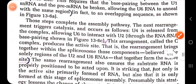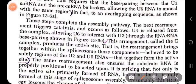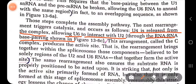In the next step, after U1 leaves the complex and U6 binds, U4 is released from the complex, allowing U6 to directly interact with U2 through RNA-RNA base pairing. This arrangement is called the C complex and produces the active site.